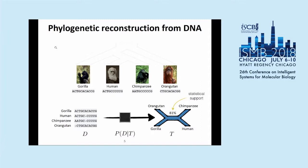When you infer the phylogenetic tree, you also have ways of computing support for branches, which tells you how much confidence you have in your reconstruction of a particular branch. This is a phylogenetic tree drawn as an unrooted tree, because that's the kind of tree we can recover using the models we typically use.